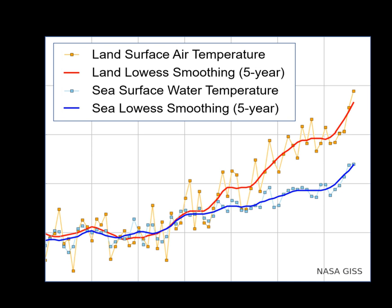Weather satellites have been available to determine sea surface temperature information since 1967, with the first global composites created during 1970. Since 1982, satellites have been increasingly utilized to measure SST and have allowed its spatial and temporal variation to be viewed more fully. Satellite measurements of SST are in reasonable agreement with in situ temperature measurements.